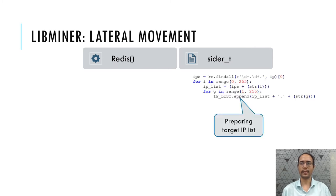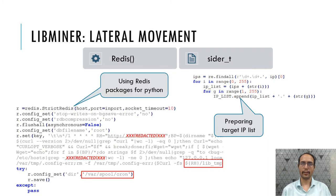For lateral movement, LibMiner downloads a Python script via the Redis function. This Python script prepares a list of IPs to be targeted by accessing subnet IP information. For each IP, it makes a connection via Python Redis packages over port 6379. If the connection is successful, it dumps a file in the cron job location which contains code to execute a LibMiner shell script.